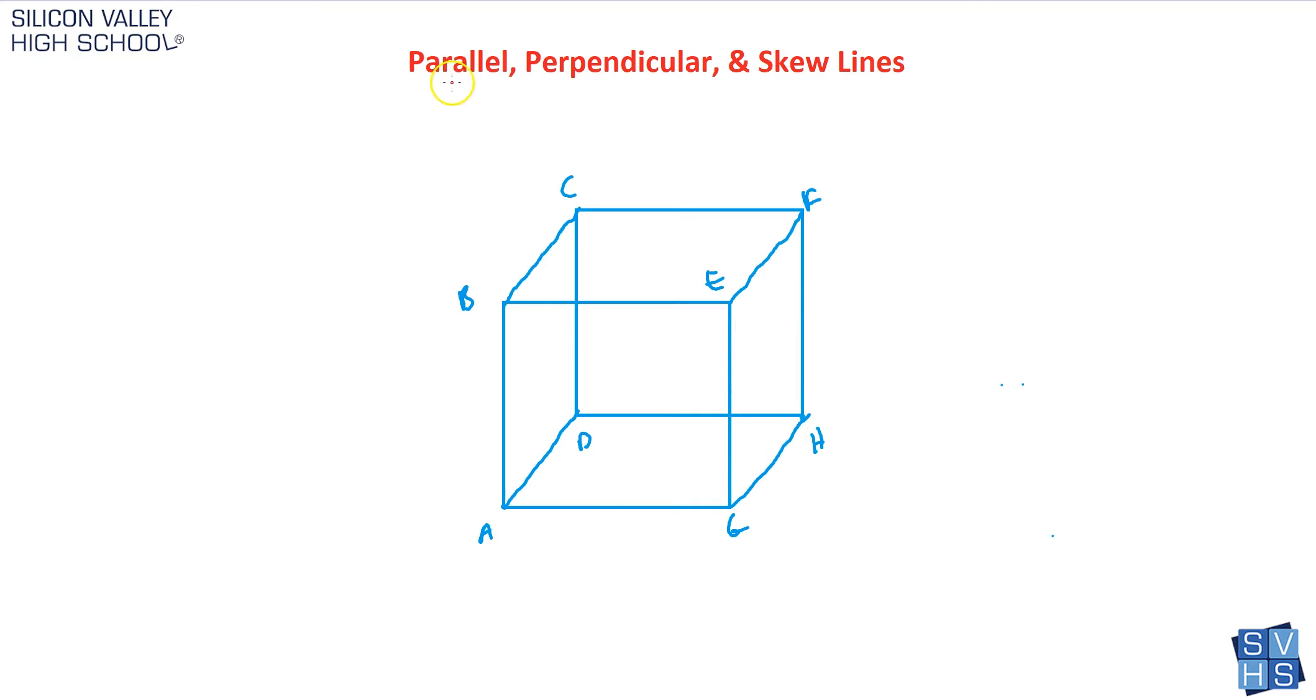So if you had two lines that never cross, that are parallel on the same plane, that would be BE, for example, would be parallel to AG. So obviously, these two lines are both on the front face, they're on the same plane, and they never, ever cross.